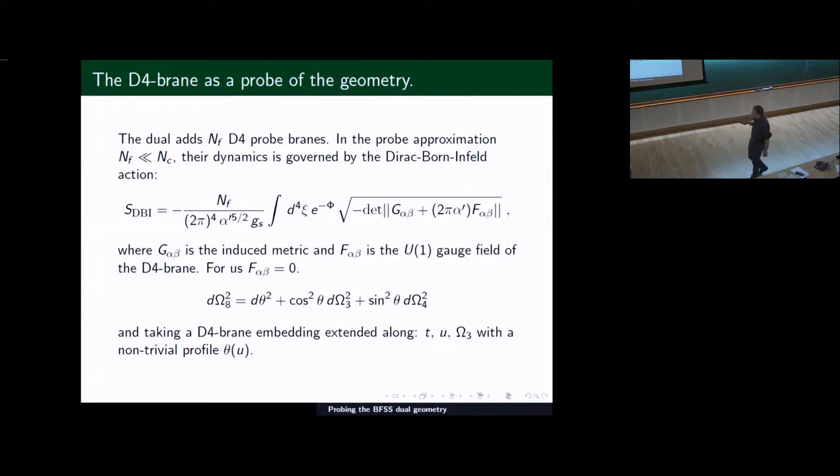The dual picture of what we're doing here is we're adding a D4 brane. Now, once we keep the number of D4 branes small, it won't affect the geometry. They will act as a probe. If they act as a probe, then they should be described by Dirac-Born-Infeld action. F is zero in this setting. So we've just got the induced metric. The metric that it's living on should be that geometry described in the BFSS setting. We want to embed our D4 brane into that geometry.